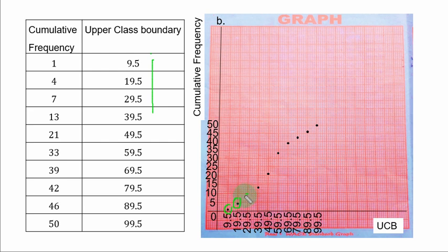7 is 29.5. You have 13 at 39.5. You have 21 at 49.5.